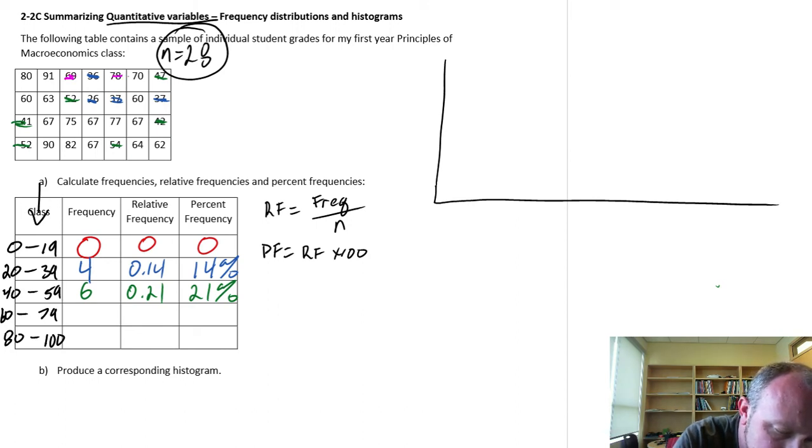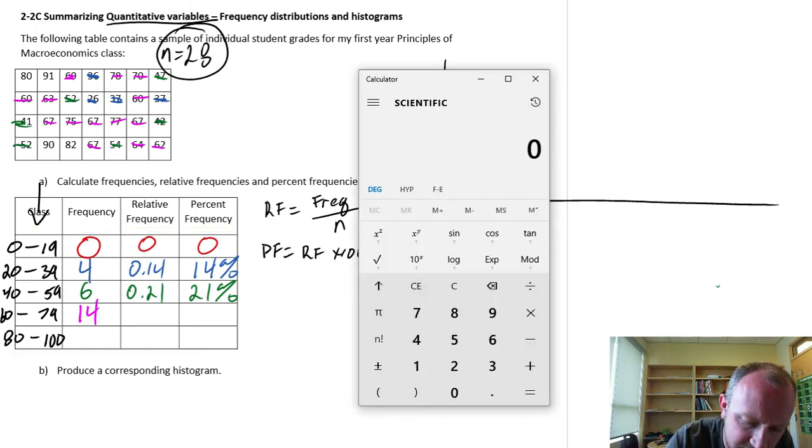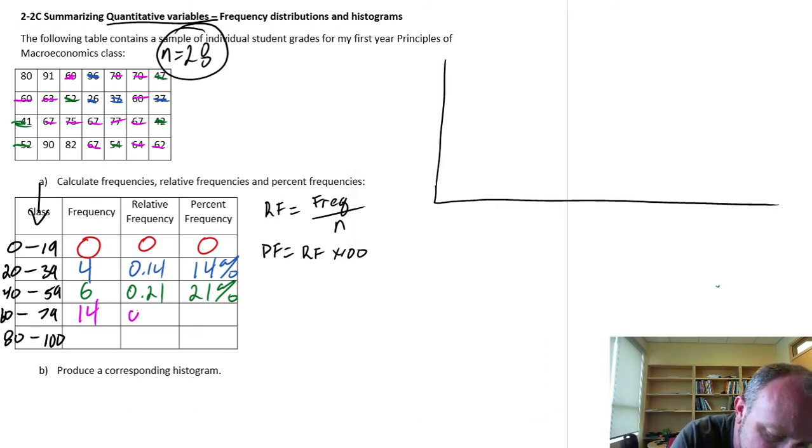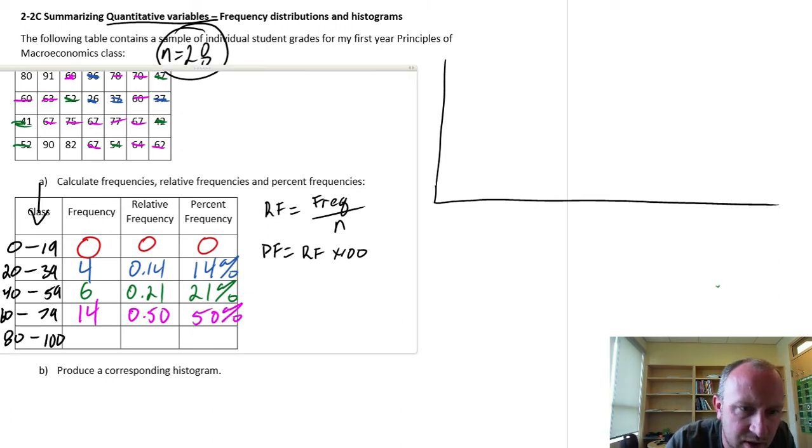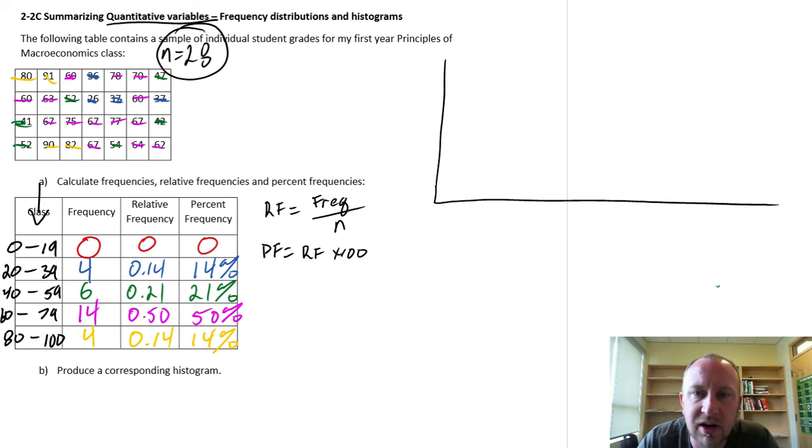And the next one, 60 to 79. 1, 2, 3, 4, 5, 6, 7, 8, 9, 10, 11, 12, 13, 14. And so again, our relative frequency, I think I can do this one in my head. 14 over 28. This is going to be 0.5, 50 percent. And finally, our last 80 to 100. So there's 1, 2, 3, and 4. And that's the same as the other that we did. It's 14 and 14 percent. So there we've got our frequency distribution table all filled out and nicely color-coded.